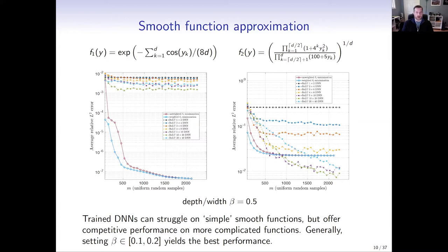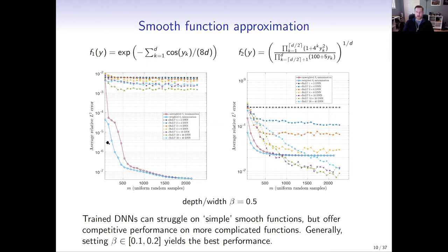With a standard ReLU architecture — fully connected, with various widths and depths — training typically using Adam, we often struggle to do well. For a simple smooth function in about eight dimensions, DNN approximations achieve errors between two and three digits of accuracy as a function of the number of samples, whereas polynomial-based methods can achieve much smaller errors. This is in spite of the fact that there exist DNNs that can get the error much lower. With standard architectures and standard training, we struggle to get high accuracy.